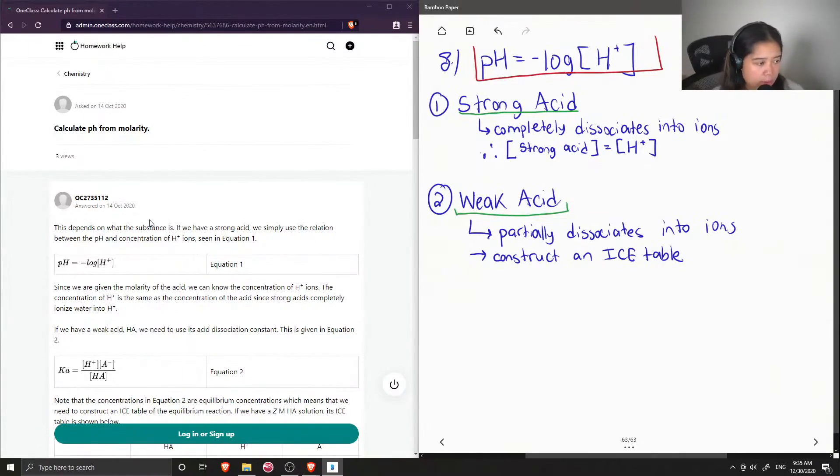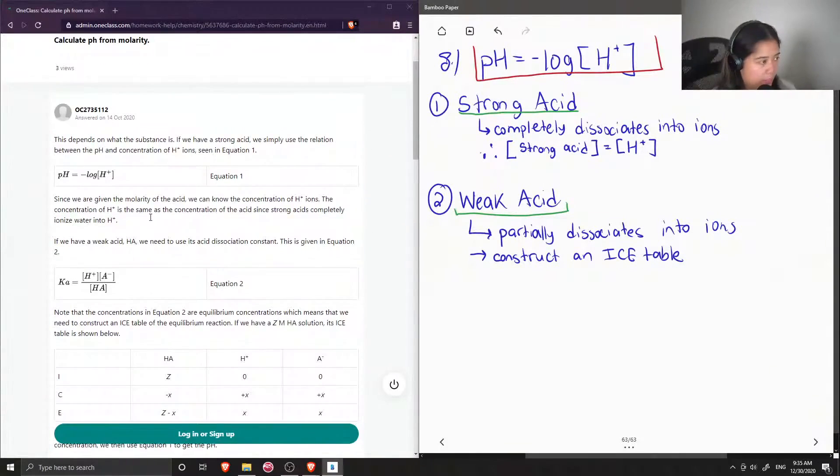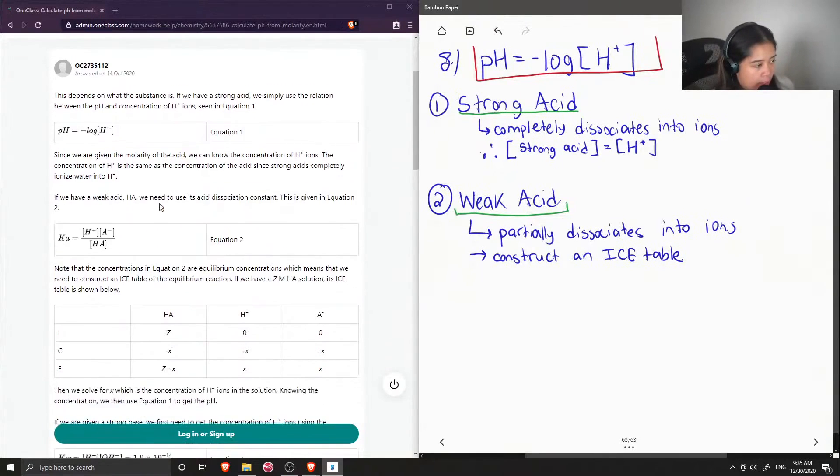Okay, so let's see what the junior tutor said, because they might have some examples. This depends on what the substance is. If we have a strong acid, we simply use the relation between the pH and concentration of H+. As seen in equation 1, pH is equal to negative log of the concentration of H+. Since we are given the molarity of the acid, we can know the concentration of H+.